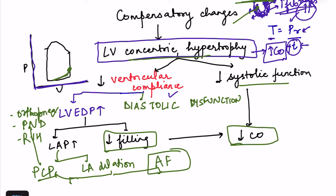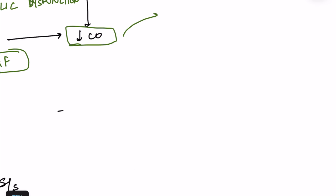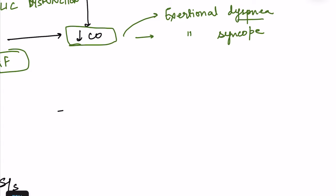Both diastolic and systolic dysfunction lead to decreased cardiac output, producing features of forward failure. These include exertional dyspnea — due to pulmonary edema reducing oxygenation and reduced cardiac output — exertional syncope, where increased exercise demand cannot be met and cerebral blood flow is compromised, and exertional angina, which is a very important complication of aortic stenosis.